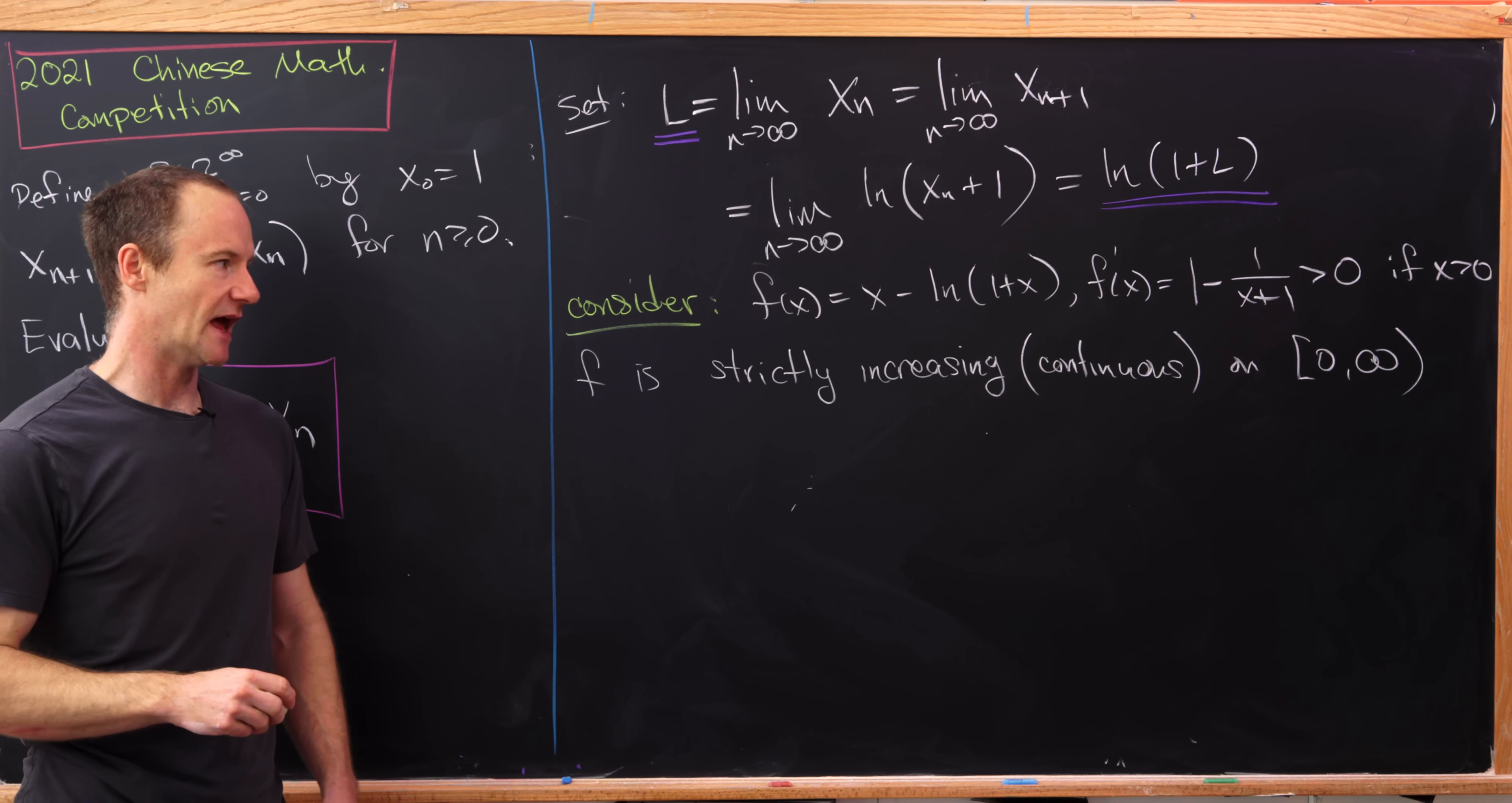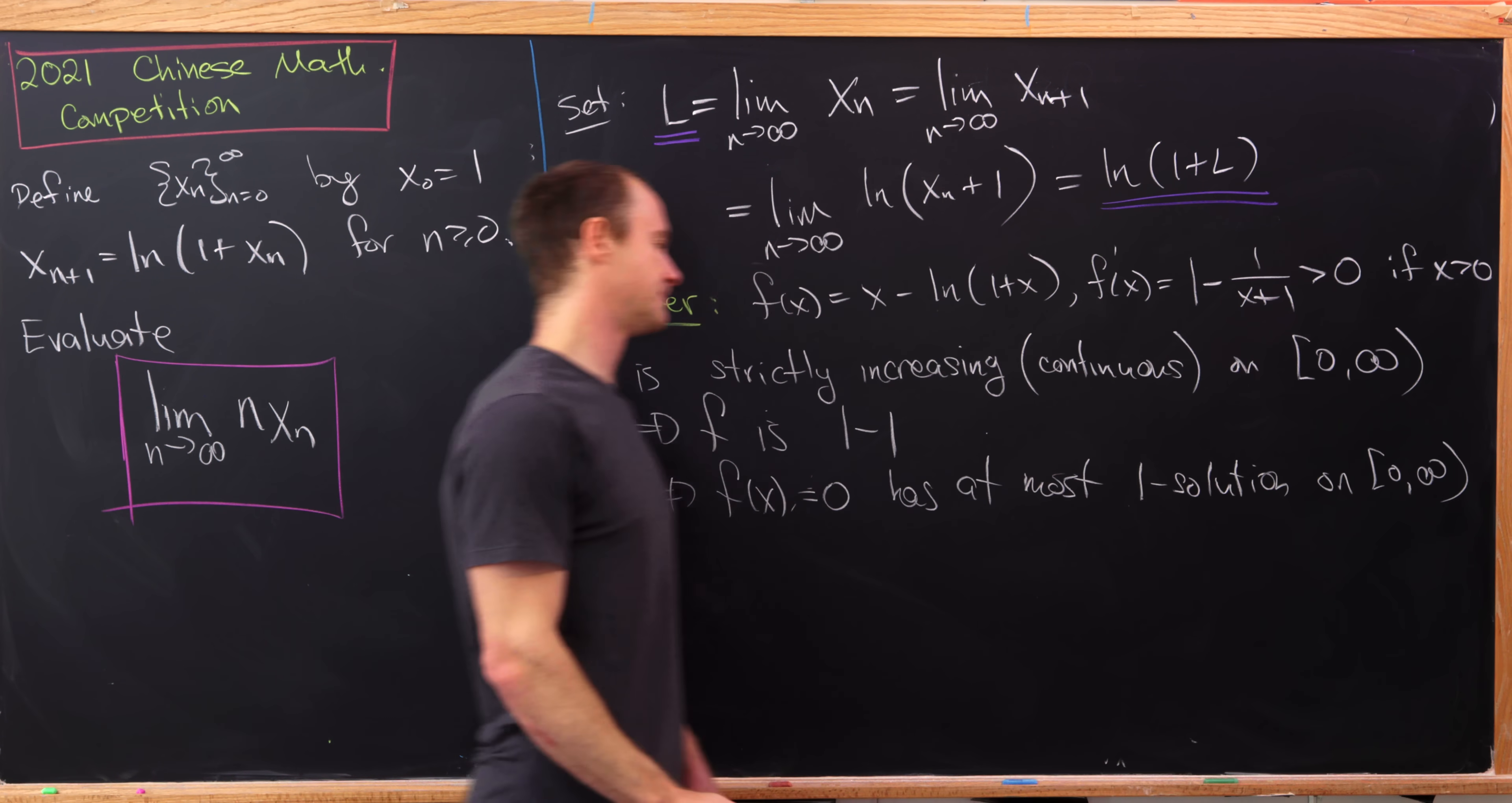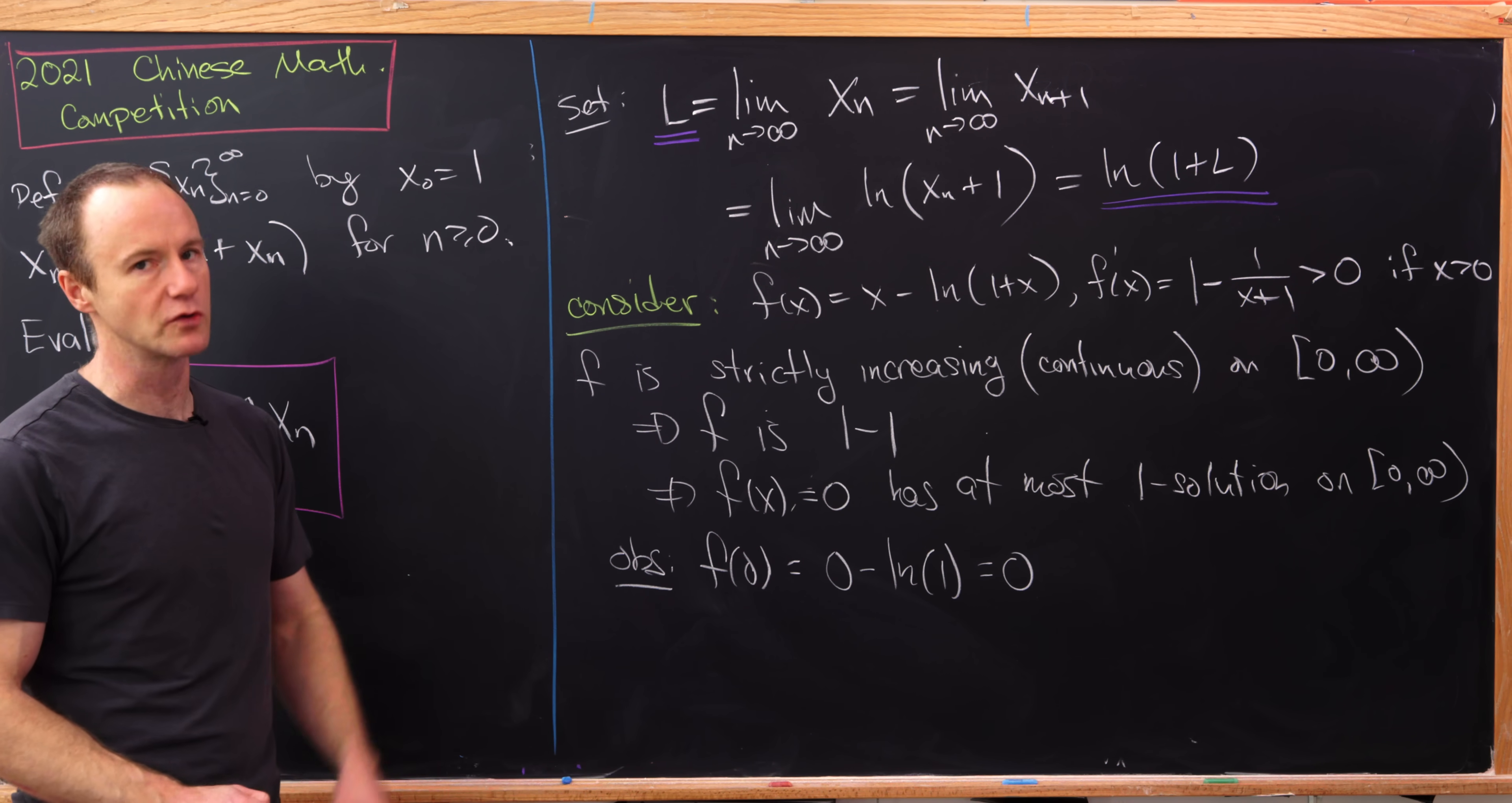Strictly increasing and continuous means that f is a 1-to-1 function, in other words, an injective function. So that tells us that f(x) equals 0 has at most one solution on this interval from 0 to infinity. So it could have 0 solutions, but if it had more than one solution, then that would contradict the fact that this thing is 1-to-1. But let's observe that f(0) is simply equal to 1 minus the natural log of 1, which is equal to 0. So that means 0 is the only solution to f(x) equals 0, the only root of the function f(x).